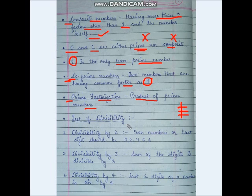These are the tests of divisibility. First is divisibility by 2. A number is divisible by 2 if its last digit is 0, 2, 4, 6, or 8. If any of these digits appear at the end, that number will be divisible by 2.